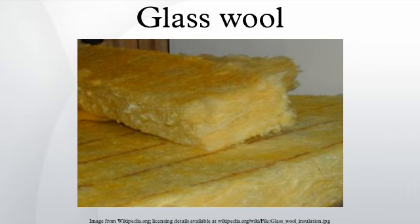Fiberglass bats and blankets: bats are pre-cut, whereas blankets are available in continuous rolls. Compressing the material reduces its effectiveness. Cutting it to accommodate electrical boxes and other obstructions allows air a free path to cross through the wall cavity. One can install bats in two layers across an unfinished attic floor, perpendicular to each other, for increased effectiveness at preventing heat bridging. Blankets can cover joists and studs as well as the space between them. Bats can be challenging and unpleasant to hang under floors between joists.